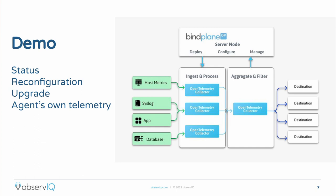This is BindPlane OP, and what you're looking at here is several hundred agents under management in a demo environment — it could very easily be several thousand. You can see all of these agents, some details about them, the status of those agents, the versions of configuration, and even the amount of data flowing through them. Here's a simple example of installing an agent: it downloads and deploys the ObserveIQ distro for OpenTelemetry, gives it an endpoint to connect to, and as soon as it comes up it connects to that server and pulls down the latest configuration, immediately coming under management.